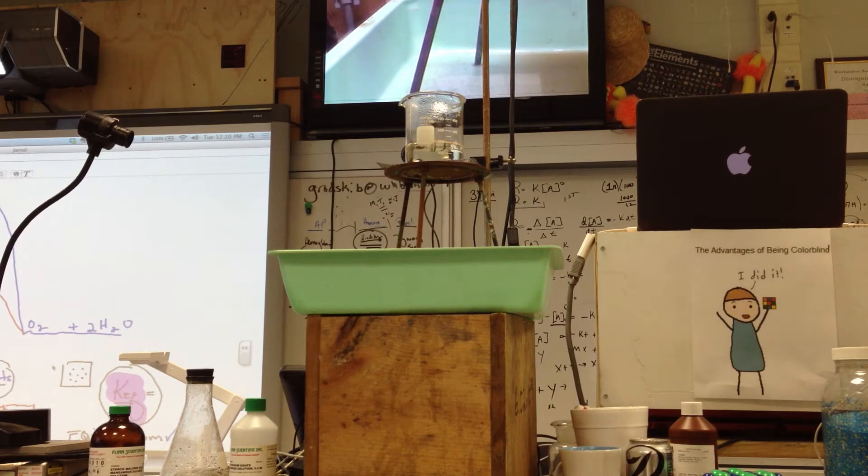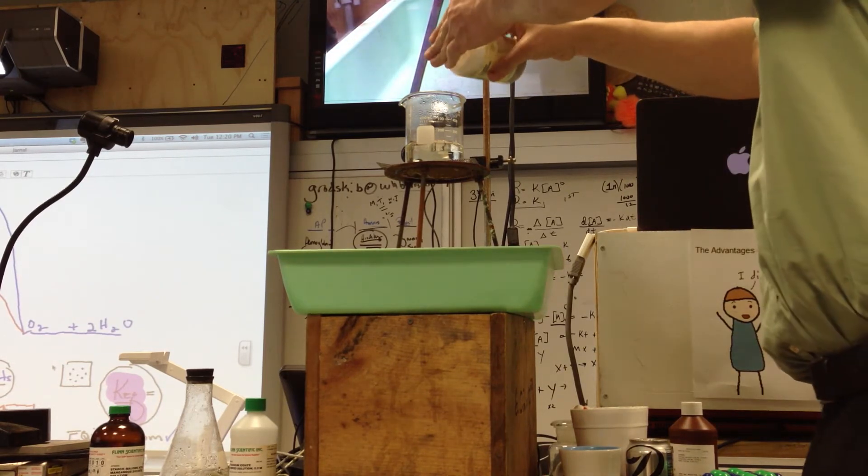So what I'm going to do is I'm going to add a catalyst. Now, this catalyst, not iodine, is a little purtier. This is cobalt chloride, and this is a nice little purdy color.